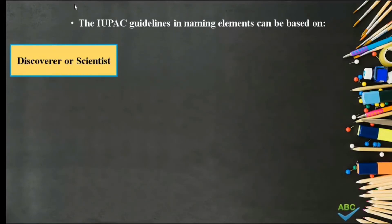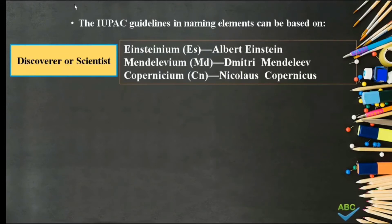Number 1. Based on the developer or scientist. Such as Einsteinium, named after Albert Einstein. Mendelevium, named after Dmitri Mendeleev. Copernicium, named after Nicolas Copernicus.